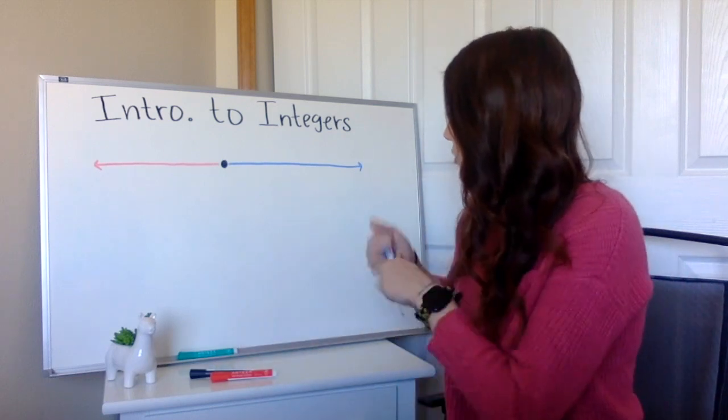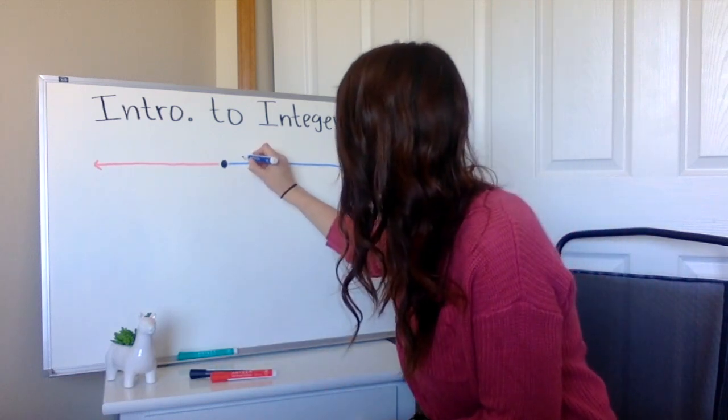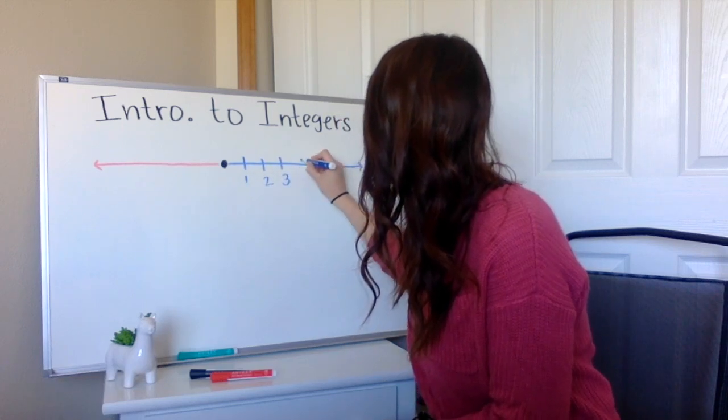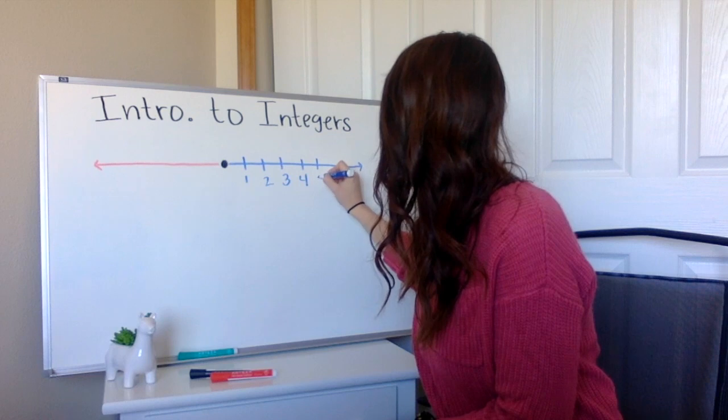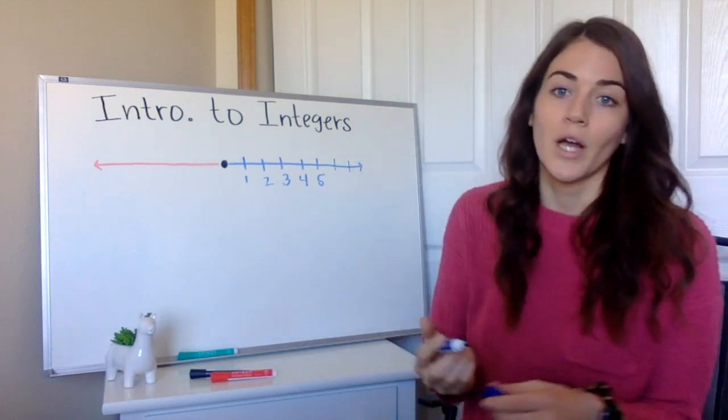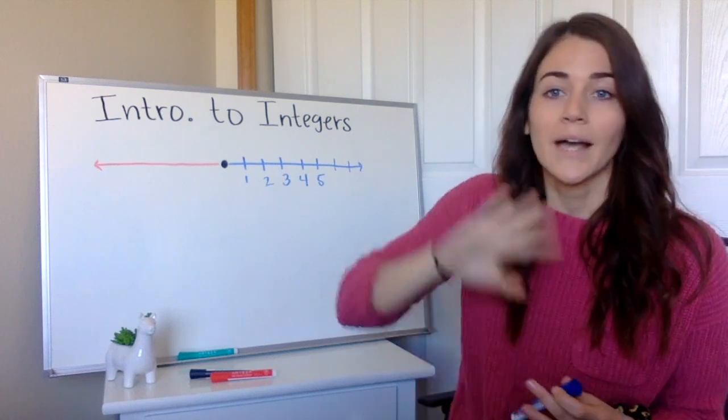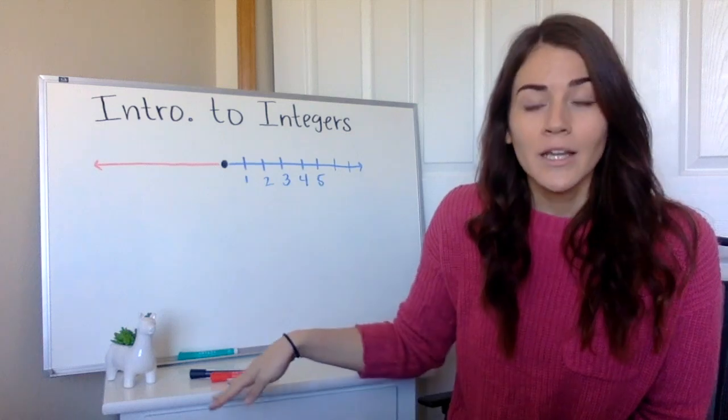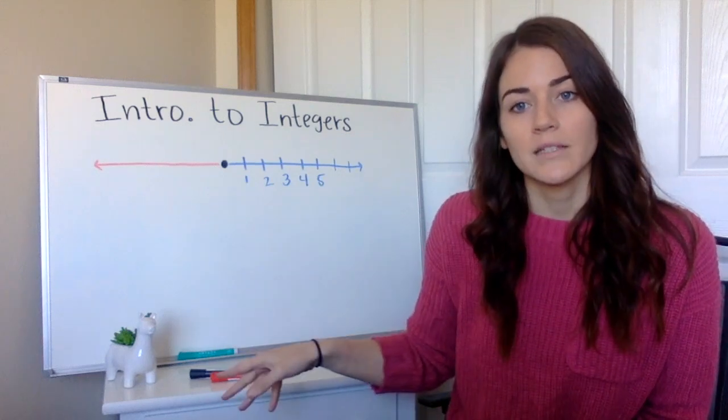So these numbers are starting with one, two, three, four, five, and those are actually going to continue to go on in the positive direction forever. Past 100, past 1000, past 1 million, all the way up to positive infinity.